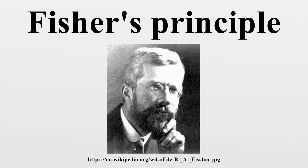W.D. Hamilton gave the following basic explanation in his 1967 paper on extraordinary sex ratios. Given the condition that males and females cost equal amounts to produce, suppose male births are less common than female. A newborn male then has better mating prospects than a newborn female, and therefore can expect to have more offspring. Therefore parents genetically disposed to produce males tend to have more than average numbers of grandchildren born to them. Therefore the genes for male-producing tendencies spread, and male births become more common. As the one-to-one sex ratio is approached, the advantage associated with producing males dies away. The same reasoning holds if females are substituted for males throughout. Therefore one-to-one is the equilibrium ratio.